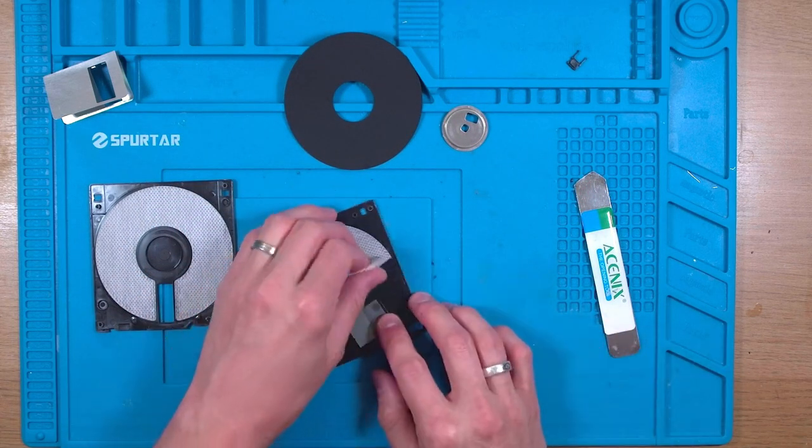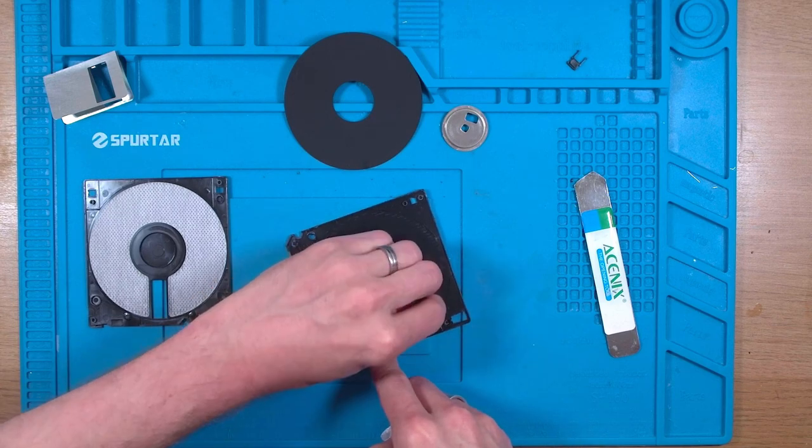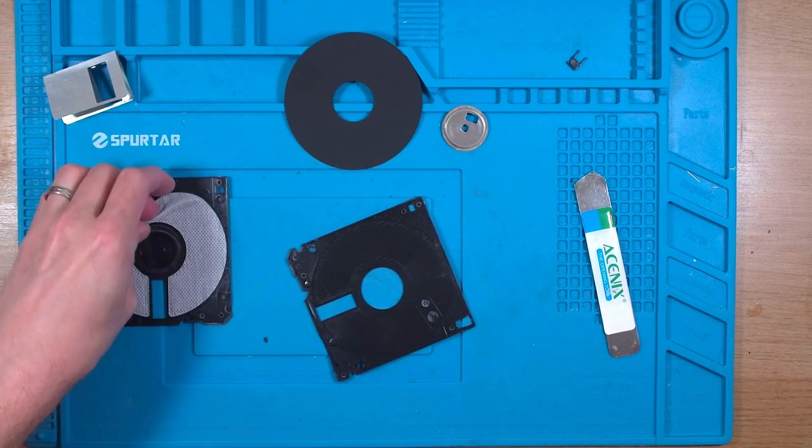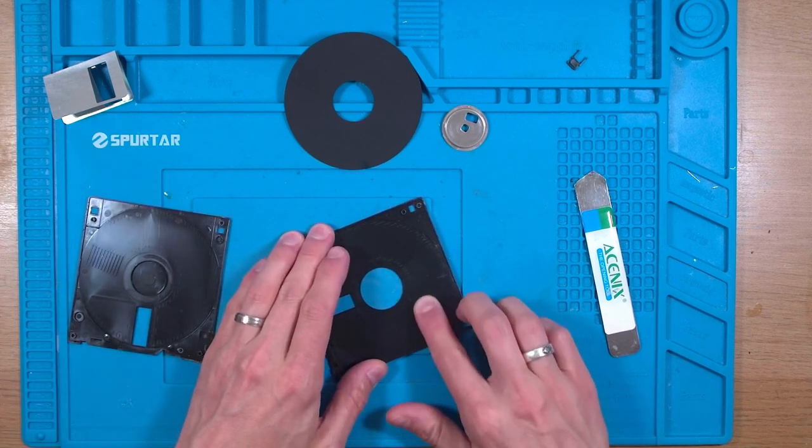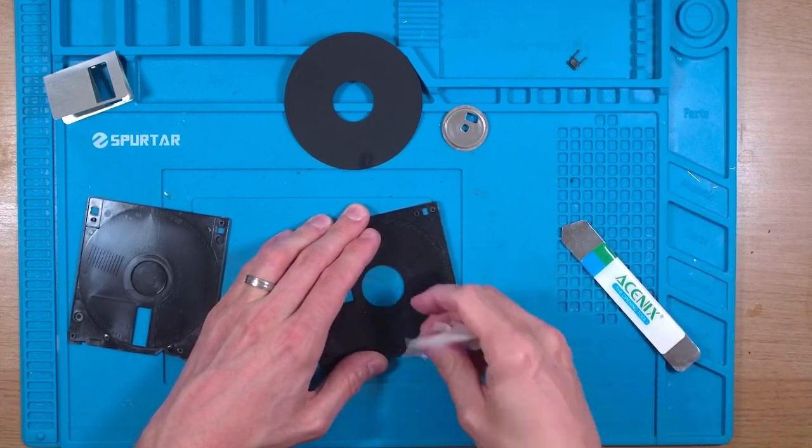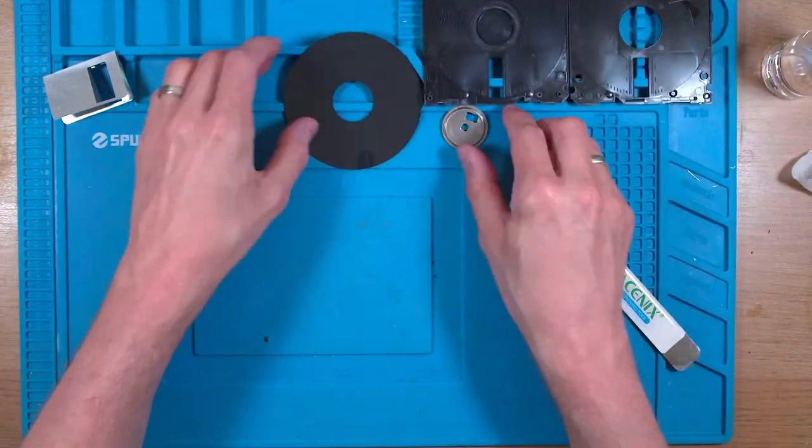We also need to remove the material used to clean the dust away from the disk and this piece of plastic that gently pushes this material against the disk. I'm then using a little bit of isopropanol to clean the glue off that was holding it in place. Now onto the disk.